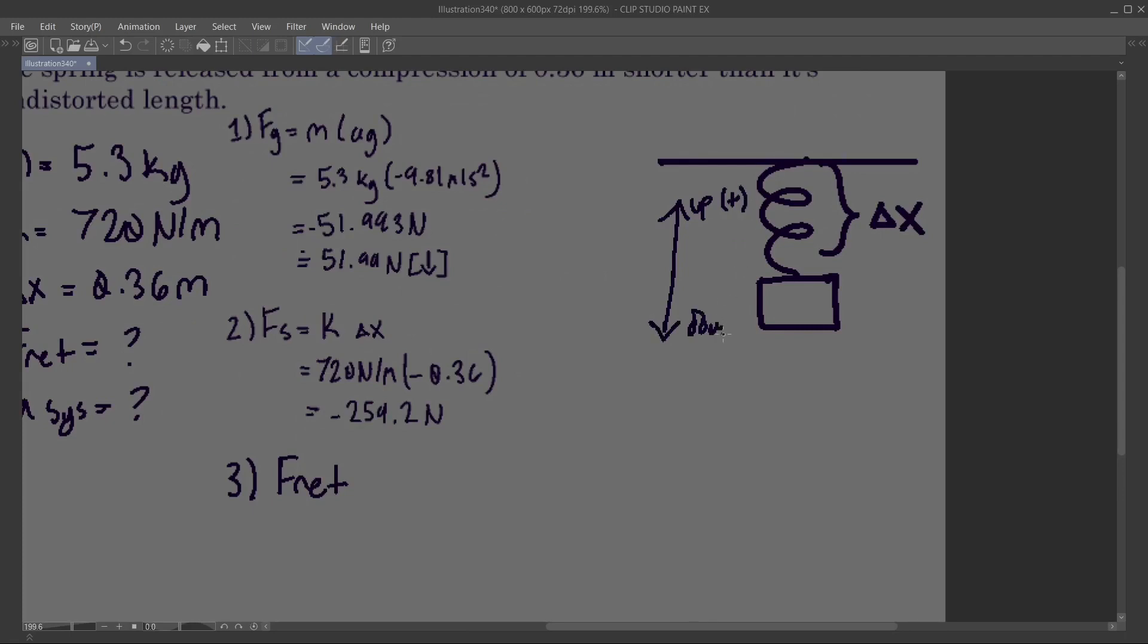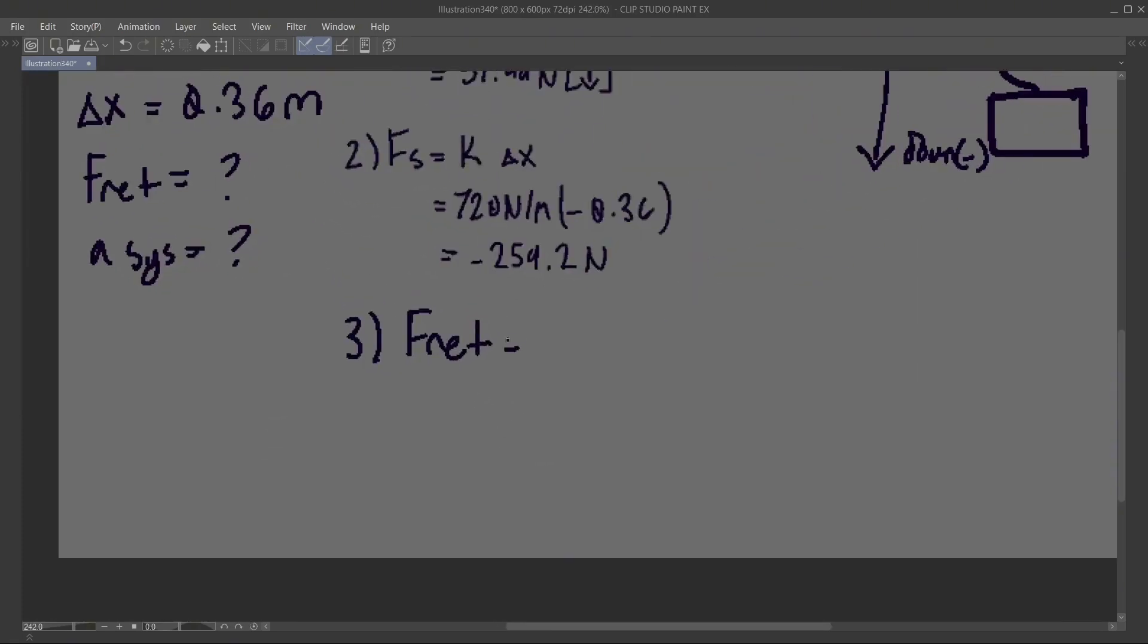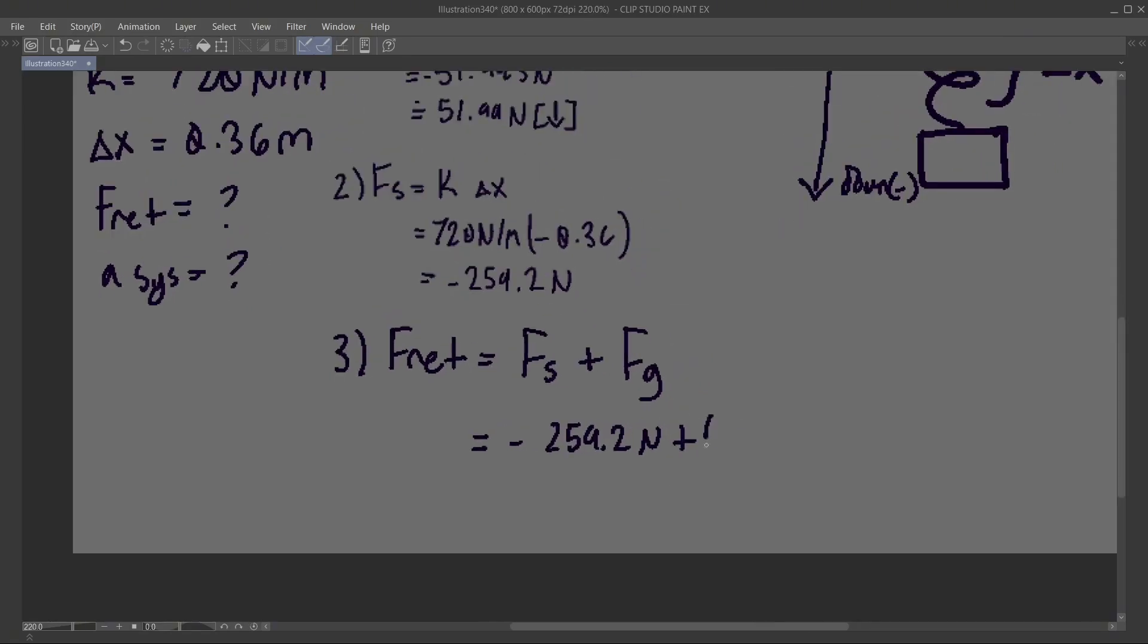And down is negative. F net is equal to force of the spring plus force due to gravity. In this case, it's going to be force of the spring, negative 259.2 newtons plus...